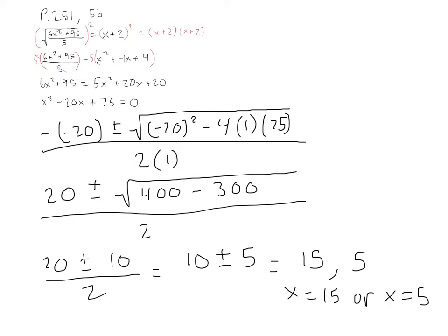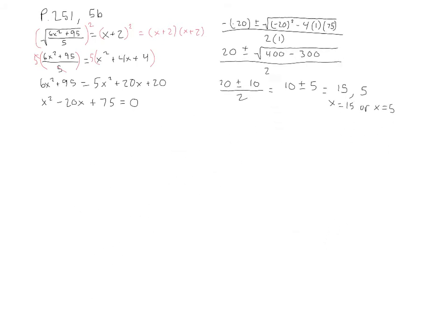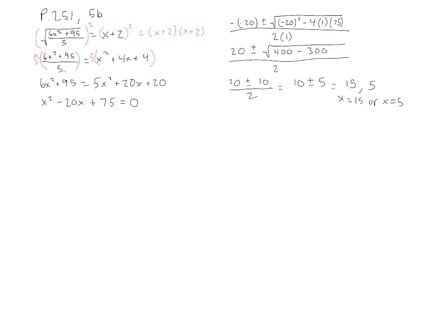Let's double check this. Let's put it back into our original equation, make sure that it works out. Give ourself more space to work with. So if we have our original equation of the square root of 6x squared plus 95 divided by 5 equals x plus 2.